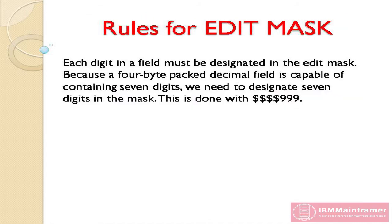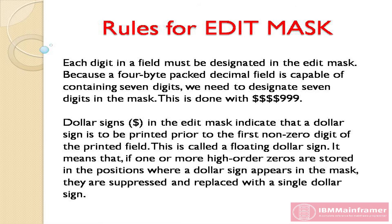The following explanations and rules apply to the edit masks in our example. Each digit in a field must be designated in the edit mask. Because a 4-byte packed decimal field is capable of containing 7 digits, we need to designate 7 digits in the mask. This is done with '$$$$999'. Dollar signs in the edit mask indicate that a dollar sign is to be printed prior to the first non-zero digit of the printed field — this is called a floating dollar sign.